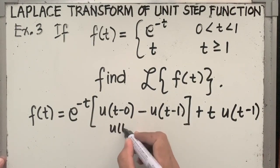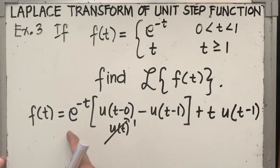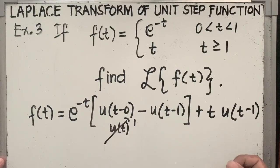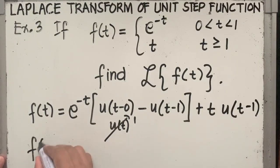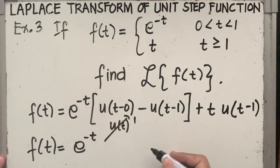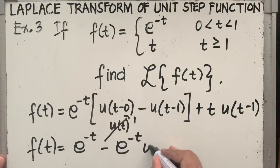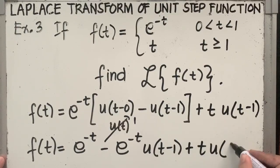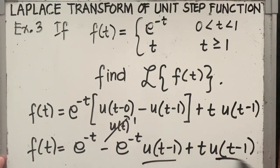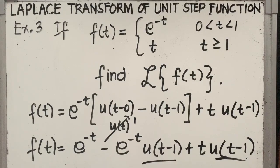Since u of t minus 0 is u of t, and that equals 1 by definition, we rewrite the expression and distribute e raised to minus t into each term. So f of t equals e raised to minus t — since e raised to minus t times 1 is just e raised to minus t — minus e raised to minus t times u of t minus 1, plus t times u of t minus 1. The last two terms contain a unit step function, so follow the substitution format replacing t by t plus a in function f only. For the first term, use the formula for the Laplace transform of elementary functions.